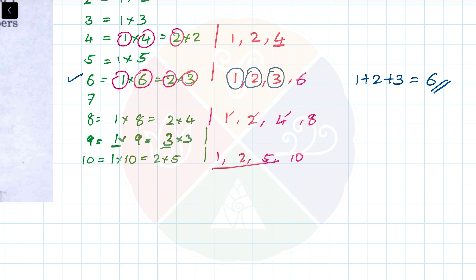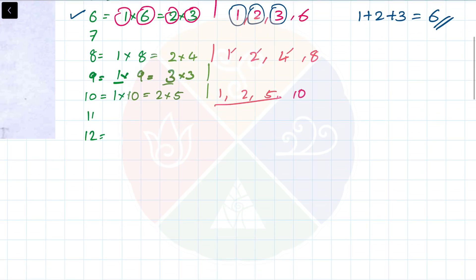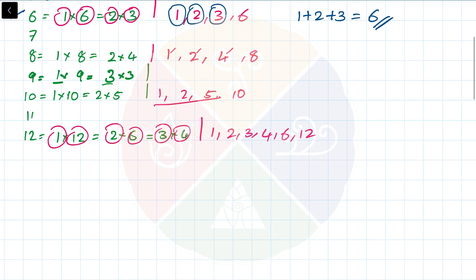If you look at 12, the factors of 12 are 1 times 12, or 2 times 6, or 3 times 4. So the factors of 12 are 1, 2, 3, 4, 6, and 12. There are many numbers.